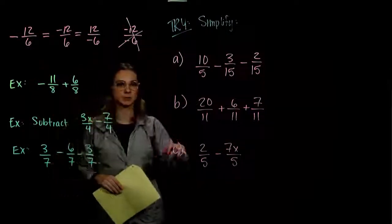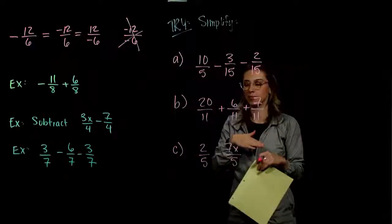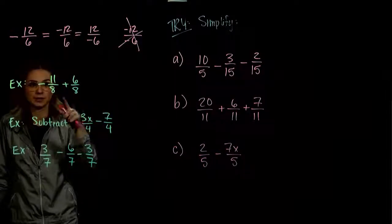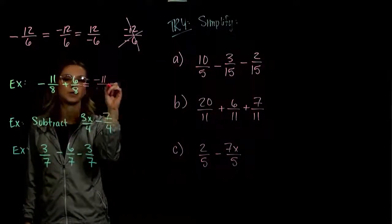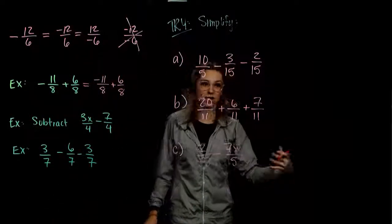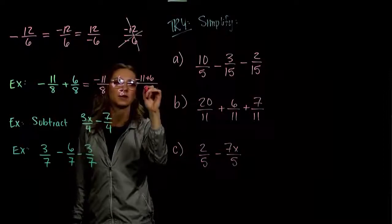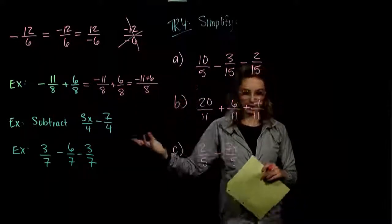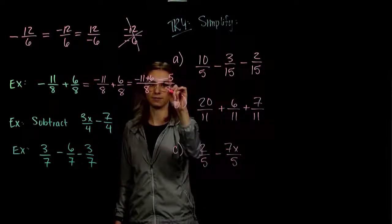As we work through these problems, whenever we have a negative on the fraction, we have to choose: give it to the top or to the bottom? In our first example, for common denominators they have to match exactly — we can't have a negative 8 and a positive 8. So we give the negative to the 11, which is typically what we'll do — just give it to the top. We've got matching denominators, add or subtract across the top, keep the same denominator. The negative holds more weight, and the difference between 11 and 6 is 5, so we get negative 5 over 8.